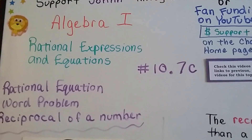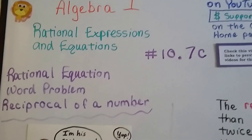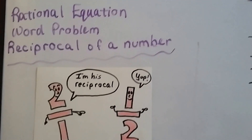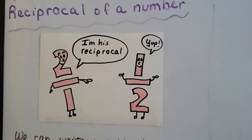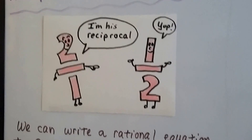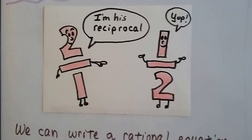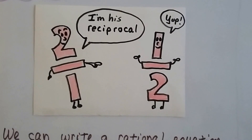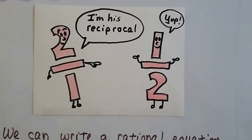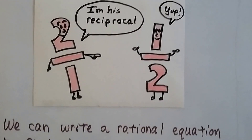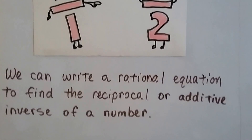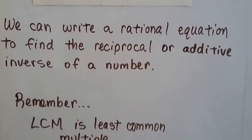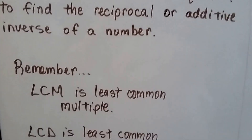Algebra 1, 10.7c, Rational Equation Word Problem: Reciprocal of a Number. You remember what a reciprocal is, right? It's an upside-down version of the fraction, so the numerator becomes the denominator. We can write a rational equation to find the reciprocal, or additive inverse, of a number.